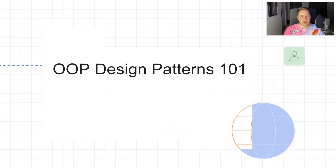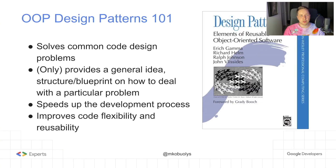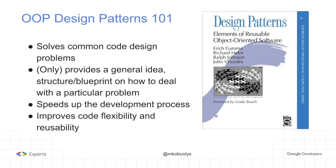Now moving to the main topic, let's start with some general information about OOP design patterns. First of all, what is a design pattern? In short, a design pattern is a typical solution to a common problem in software design — and you shouldn't mix that with UI design. A design pattern names, abstracts, and identifies the key aspects of a common design structure that make it useful for creating a reusable, object-oriented design. Design patterns gained their popularity after the Gang of Four book was published in 1994.